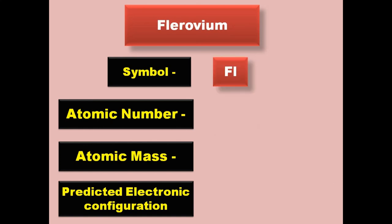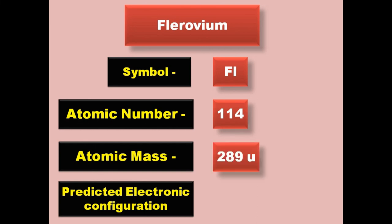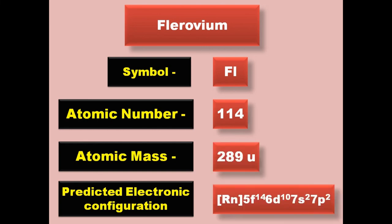Flerovium has symbol Fl, atomic number 114, atomic mass 289, predicted electronic configuration [Rn] 5f14 6d10 7s2 7p2. Flerovium is a post-transition metal and is expected to be solid at room temperature.